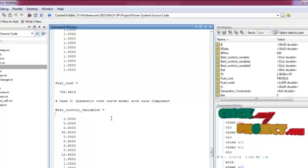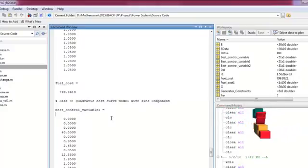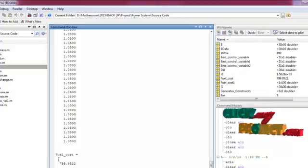The third case is quadratic cost curve model with sine component. In this case also, we obtained the best control variable using ABC algorithm. Finally, we obtained the fuel cost value.